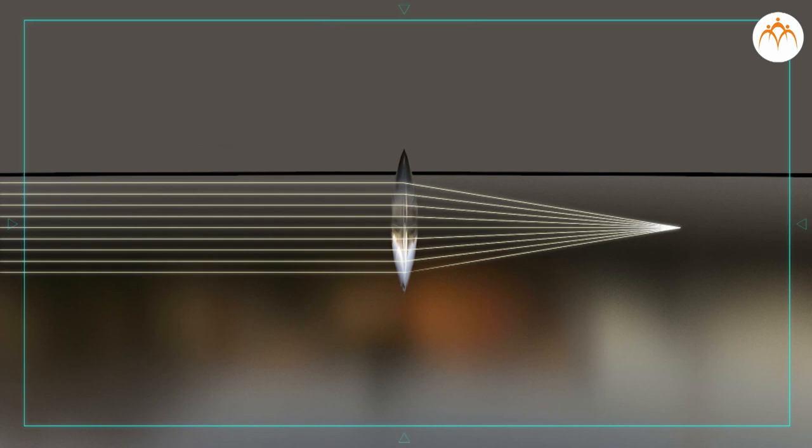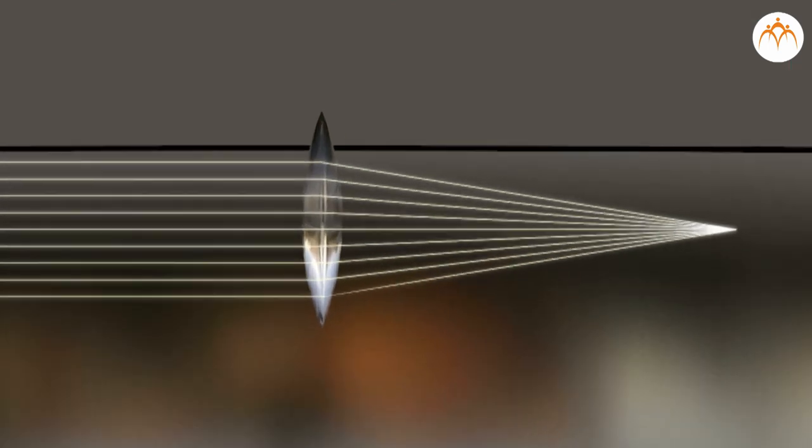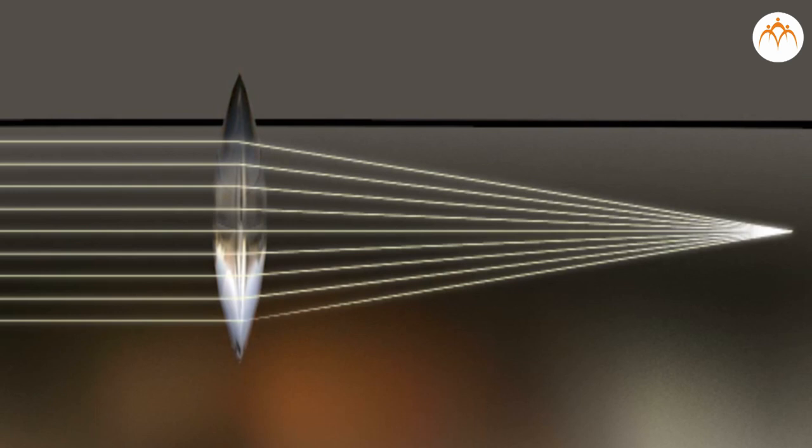When parallel rays reach the lens, each ray refracts according to the relative angle of incidence. The outermost rays refract the most. The ray perpendicular to the surface passes undeterred.